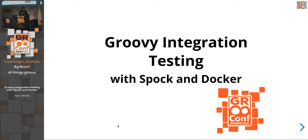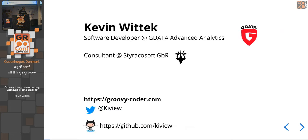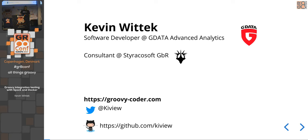My name is Kevin. I work at G Data Advanced Analytics, a German security software company — a daughter company of G Data Software, one of the biggest antivirus software companies in Germany. Our subcompany specializes in building security software for enterprise customers like anomaly detection systems. I also have my own small consultancy where I work on continuous integration, TDD, clean code, and so on.